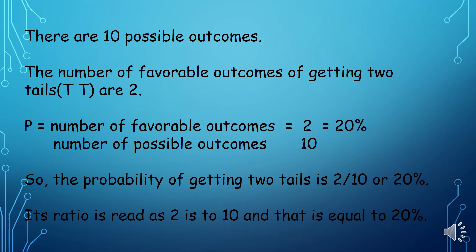So the probability is equal to number of favorable outcomes over the number of possible outcomes. That is equal to 2 over 10, which equals 20 percent. So the probability of getting 2 tails is 2 over 10 or 20 percent. Its ratio is read as 2 is to 10 and that is equal to 20 percent.